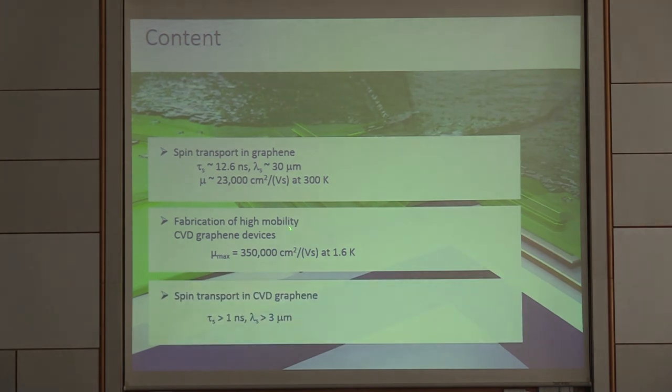I will also show you one slide where we can go up now to 3 million at low temperature CVD. And the last part is now more or less combining these two. We have now started to use the CVD graphene to make spin transport experiments.